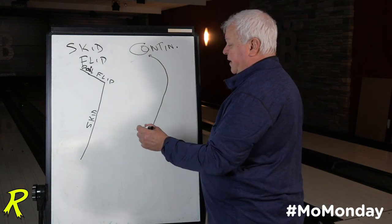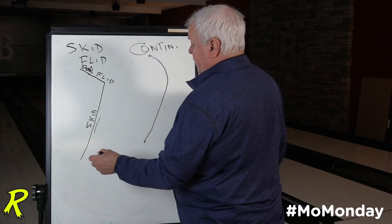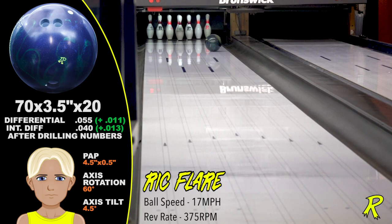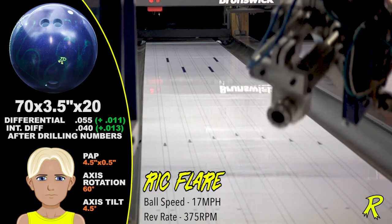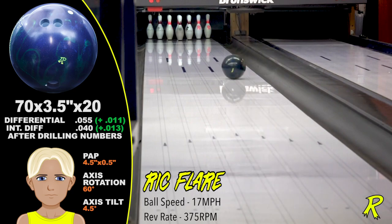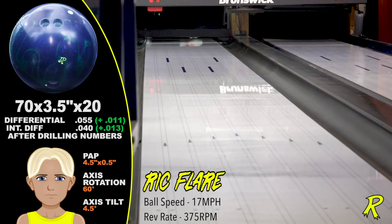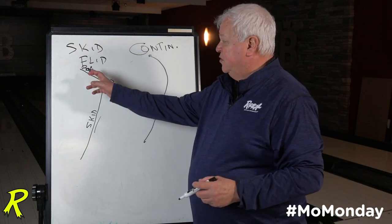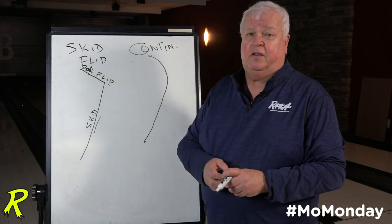So in a skid flip scenario, the ball skids to the break point, makes a quick transition, heads towards the pins, and then the amount of continuation of roll happens after that. So if this zone of flip is too quick and too violent, you're going to lose some of the roll and you lose some of the continuation.